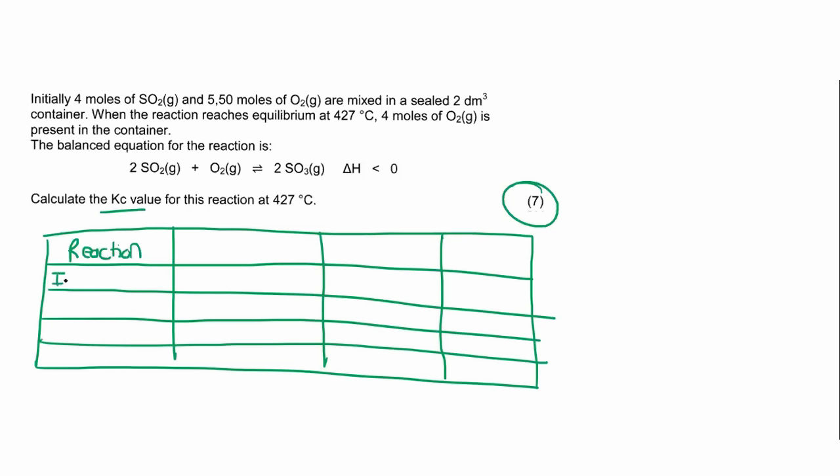So your teacher might label this a little bit differently to me. You can use whichever method is easiest for you to remember. But what we have is the reaction. Then over here we have initial moles, then we have change, and your teacher might call this the difference or whatever. It doesn't matter as long as you understand what it means. And then this is the equilibrium moles, and then this is the concentration at equilibrium.